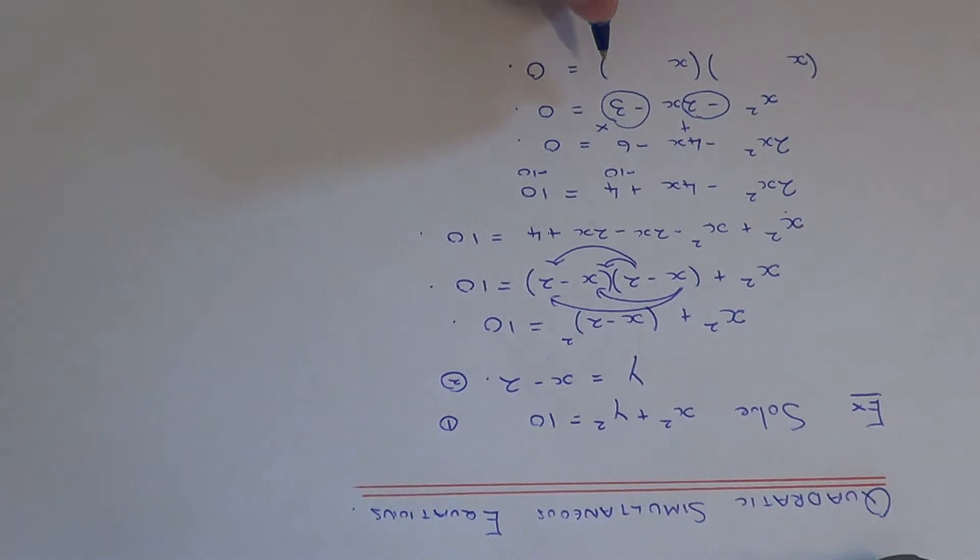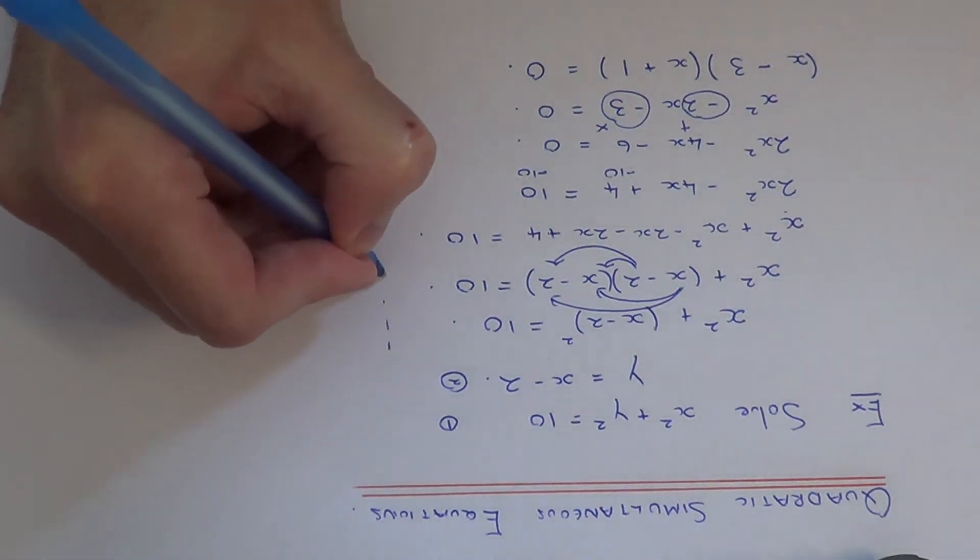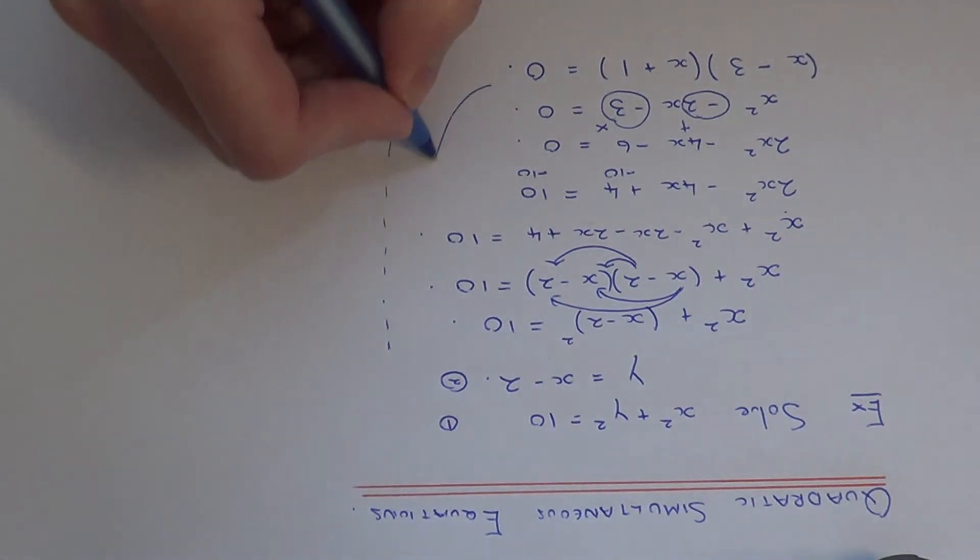So the pair of numbers that we need are minus 3 and plus 1, because minus 3 times 1 is minus 3, and minus 3 add 1 is minus 2. So let me just go up at the top here.